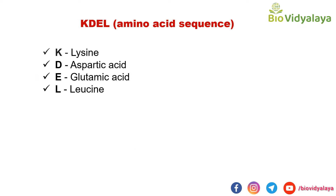So KDEL is an amino acid sequence. I think you all know the one letter code for amino acids. K stands for lysine, D for aspartic acid, E for glutamic acid, and L for leucine. So KDEL sequence means lysine, aspartic acid, glutamic acid, leucine. How can we write KDEL sequence in three letter code?